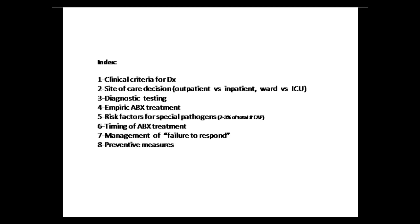I'll be covering: the clinical criteria for diagnosis of community-acquired pneumonia; how to decide about site of care, whether outpatient versus inpatient, and if admitted, general ward versus ICU; diagnostic testing; empiric antibiotic treatment; risk factors for special pathogens (which constitute just two to three percent of total CAP); timing of antibiotic treatment; management of patients who fail to respond; and preventive measures.